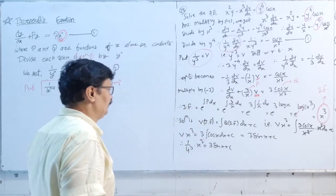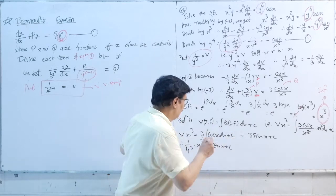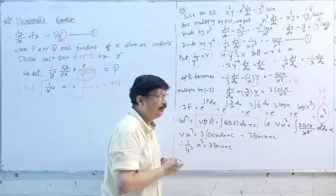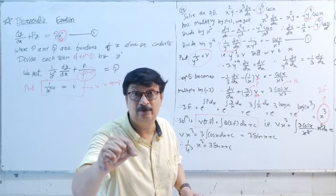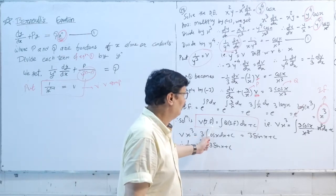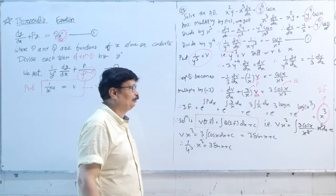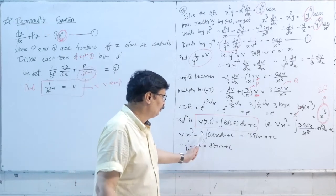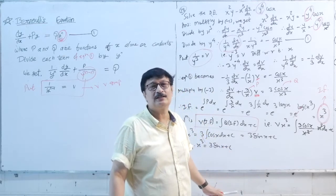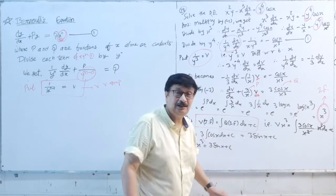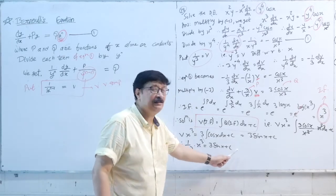The solution is v·IF = ∫q·IF dx + c. So v·x³ = ∫(3cos(x)/x³)·x³ dx + c = 3∫cos(x) dx + c = 3·sin(x) + c. This is the answer.